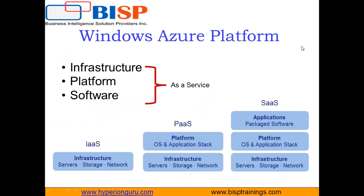Windows Azure compute offerings fall into three main categories: Infrastructure as a Service, Platform as a Service, and Software as a Service. Starting with Infrastructure as a Service, since it is what people are most familiar with — in short, Infrastructure as a Service gives you a server in the cloud, or a virtual machine, that you have complete control over.